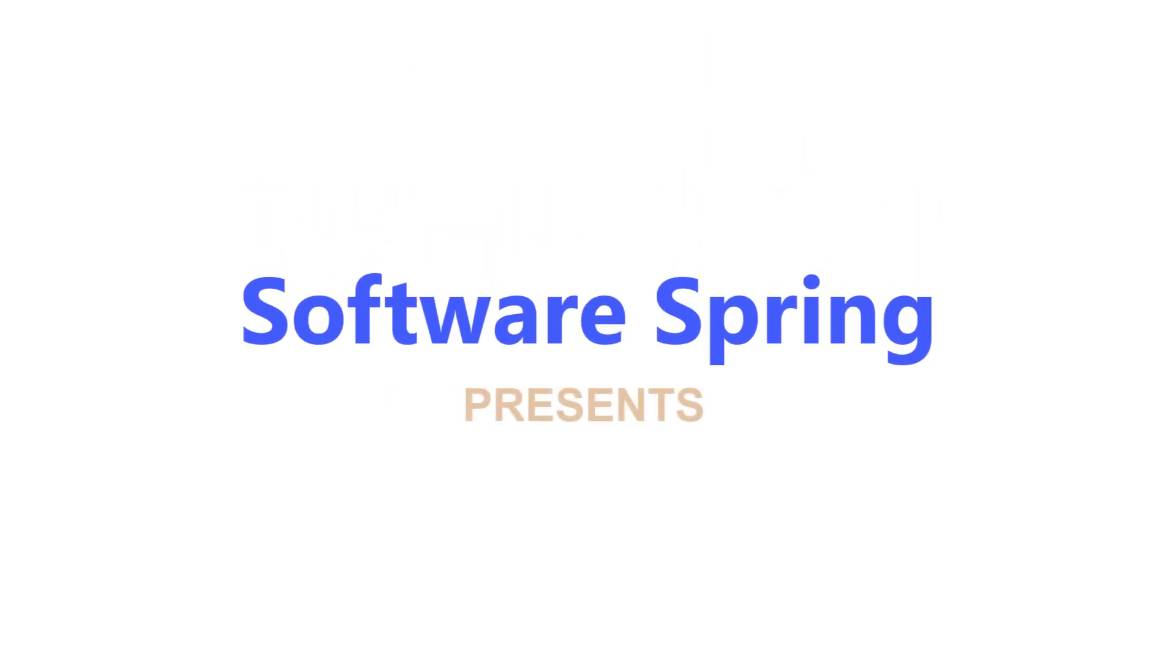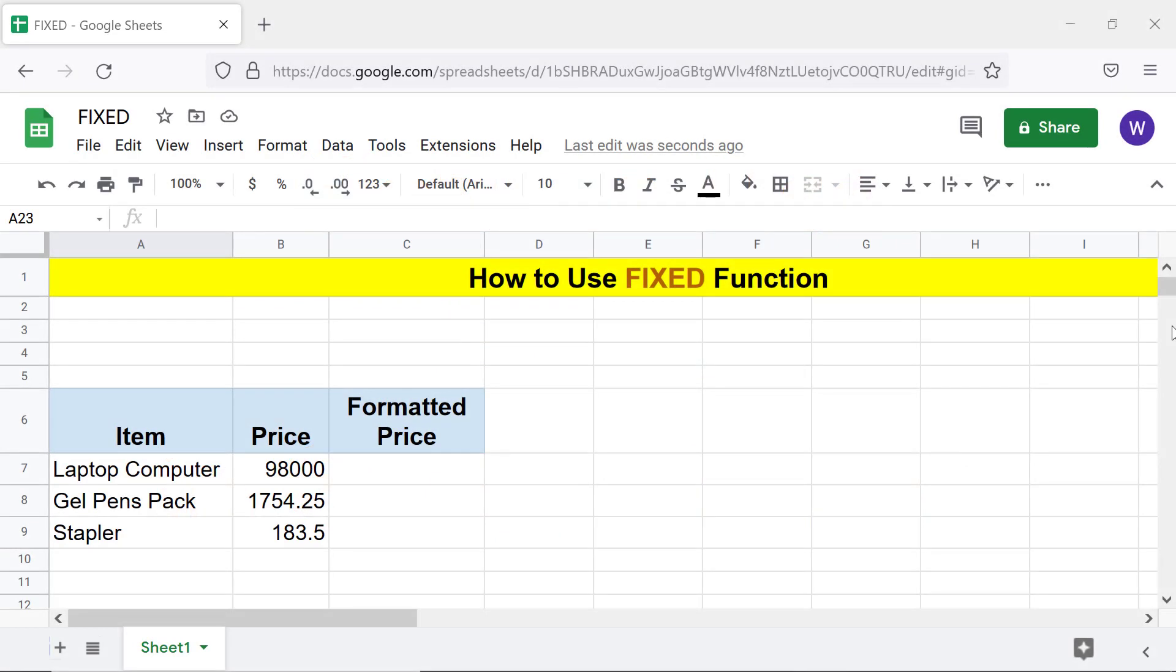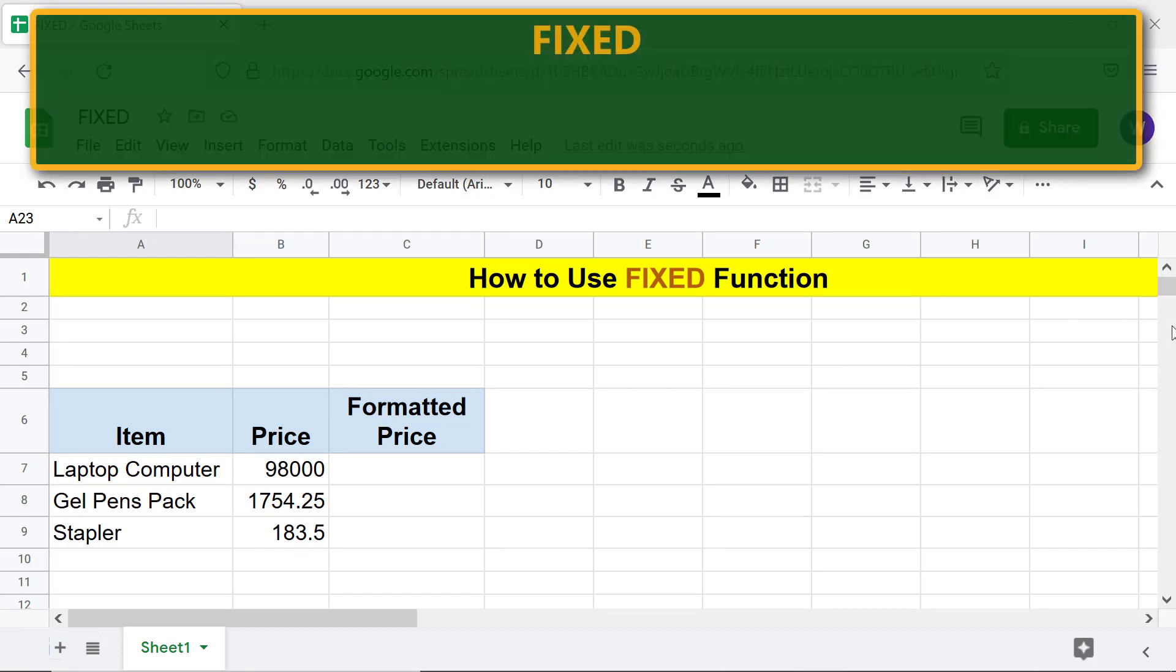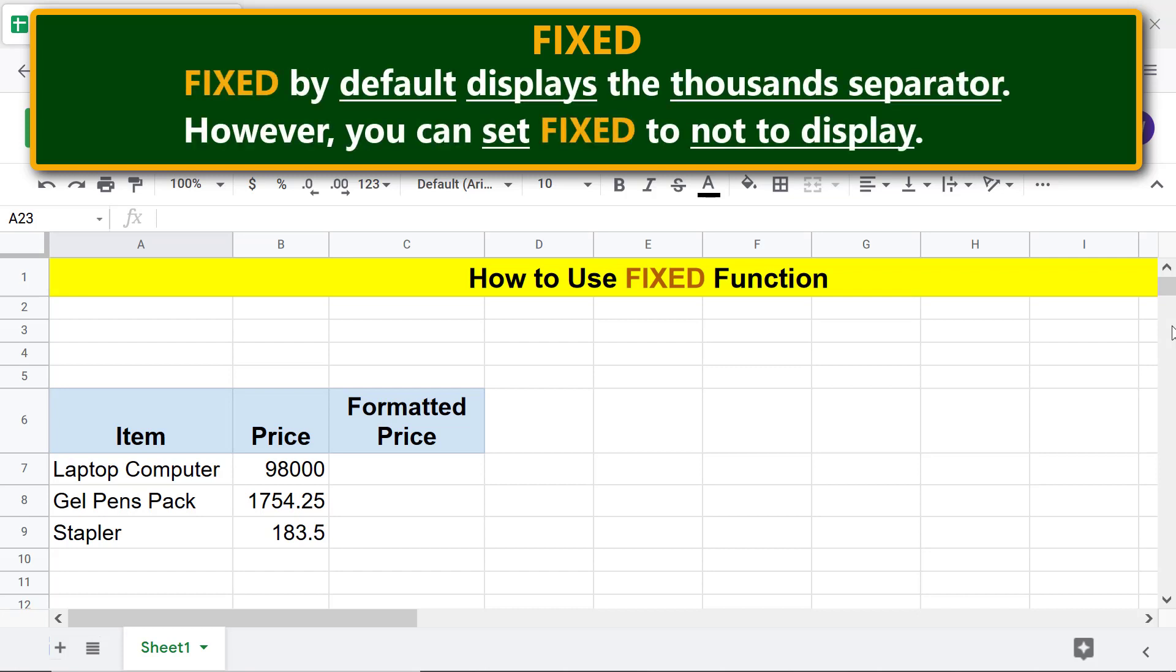Software Spring presents how to use FIXED in Google Sheets. Hello folks, greetings and welcome to this tutorial on using the FIXED function. Here is an intro to FIXED: FIXED formats a number with a specified number of decimal places.